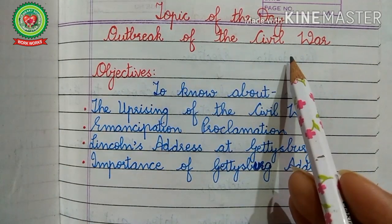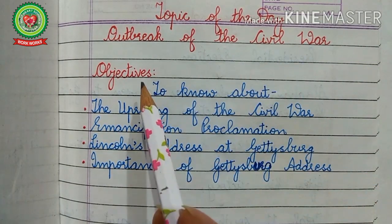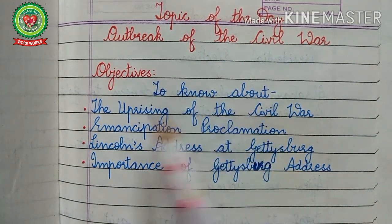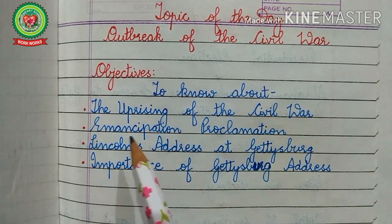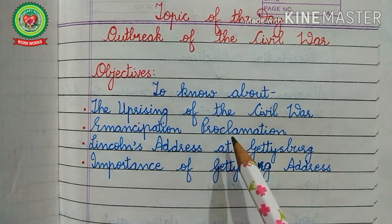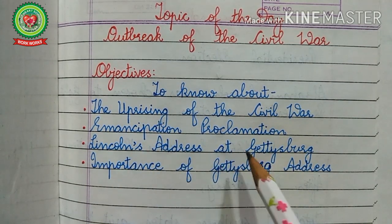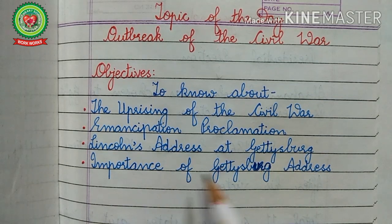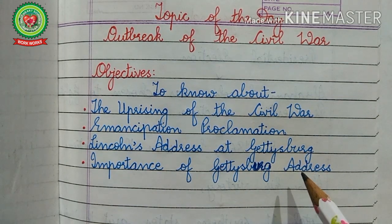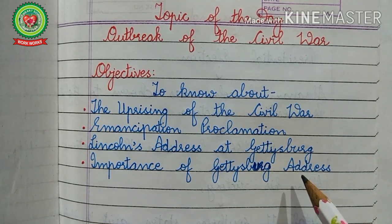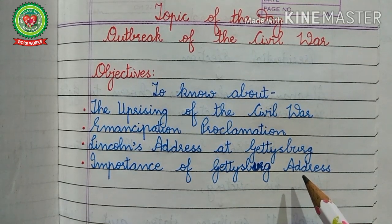The topic of today's lesson is the outbreak of the Civil War. The objectives of today's topic are to know about the uprising of the Civil War, the Emancipation Proclamation, Lincoln's address at Gettysburg, and the importance of the Gettysburg Address. Now before discussing today's topic, let us recall the definitions and cross-question answers related to the previous topic.